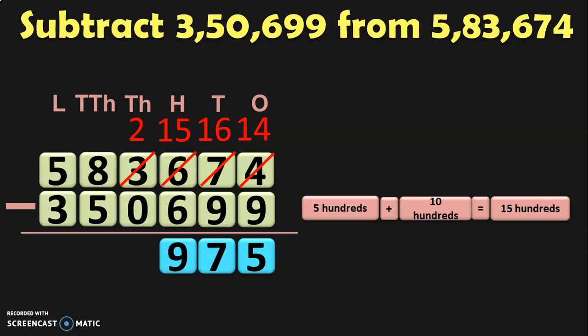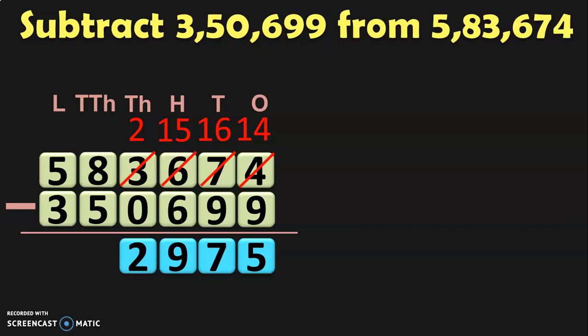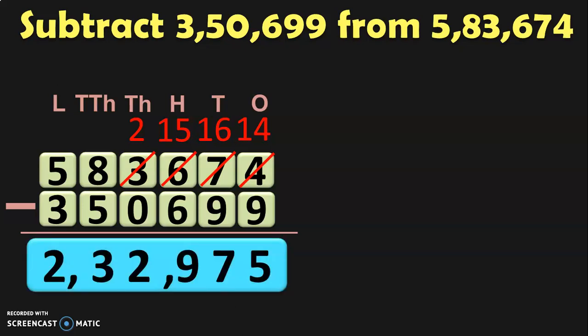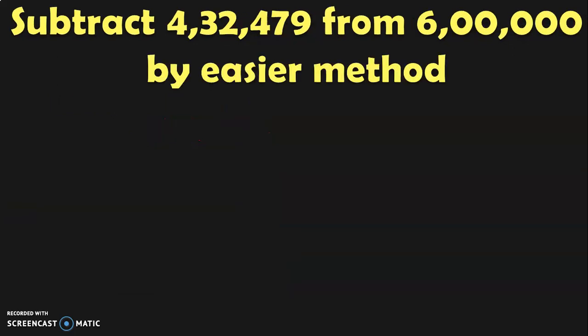In the thousands place it is 2 minus 0, which is 2. In the ten-thousands place, 8 minus 5 is 3. And in the lakhs place, 5 minus 3 is 2. So the answer is 2,32,975. I have dealt with this topic — subtraction of large numbers by regrouping — in a separate video. The link to that video is given below in the description box and also in the iCard section.